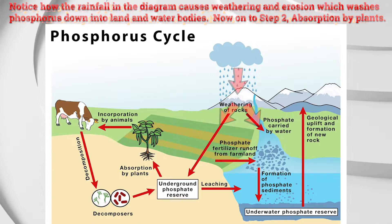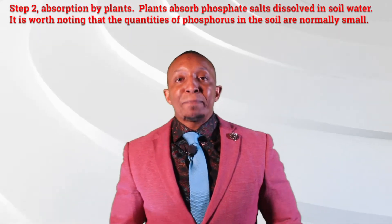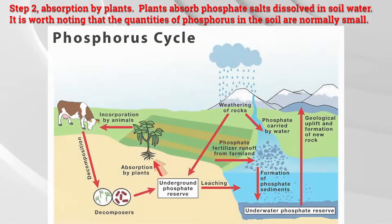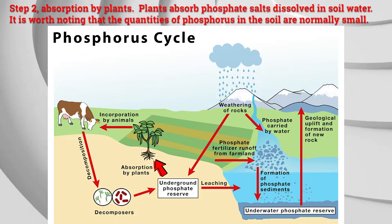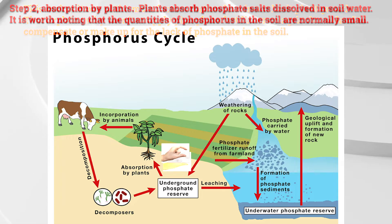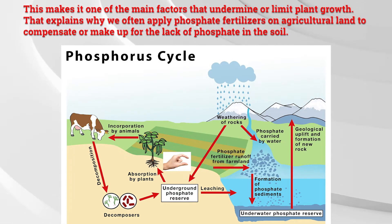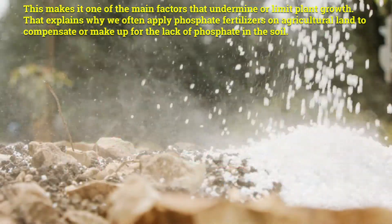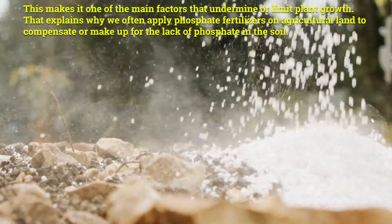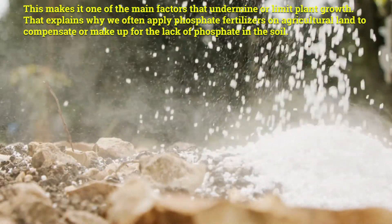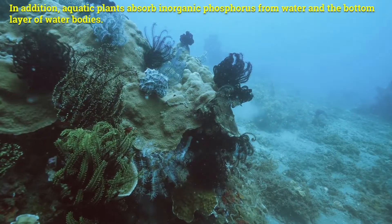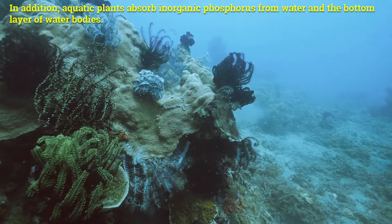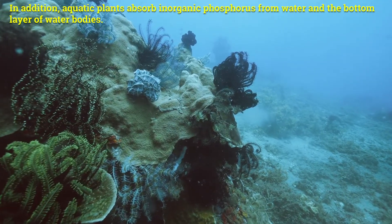Step 2: Absorption by plants. Plants absorb phosphate salts dissolved in soil water. It is worth noting that the quantities of phosphorus in the soil are normally small. This makes it one of the main factors that limit plant growth. That explains why we often apply phosphate fertilizers on agricultural land to compensate for the lack of phosphate in the soil. In addition, aquatic plants absorb inorganic phosphorus from water and the bottom layer of water bodies.